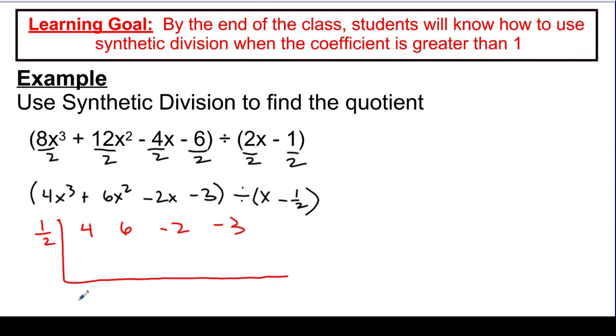And I'm going to go along, and we're going to do our multiplication. So I'm going to bring down my 4, and I'm going to multiply. Half times 4 looks like 2. Add down the column, and that becomes an 8. Half times 8 is 4. I'm going to add down the column and get a 2. Half times 2 is 1. I'm going to add down the column, and I'm going to get a negative 2, right?